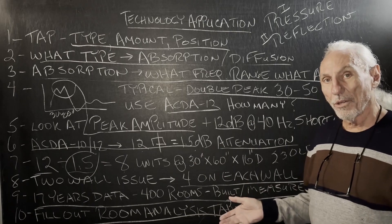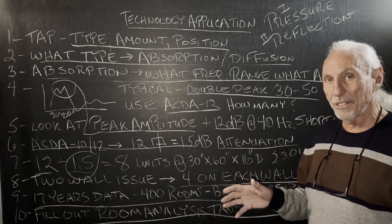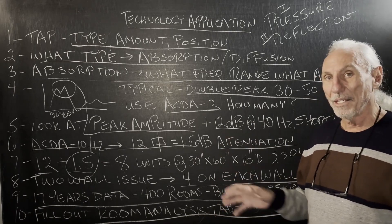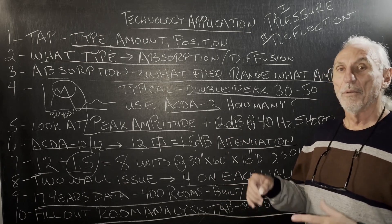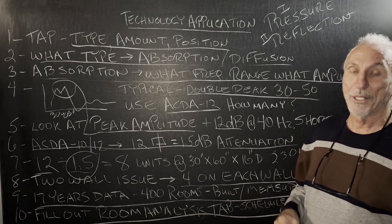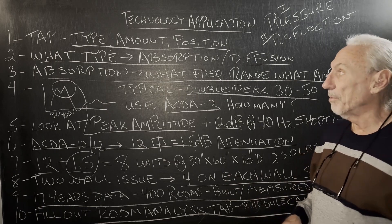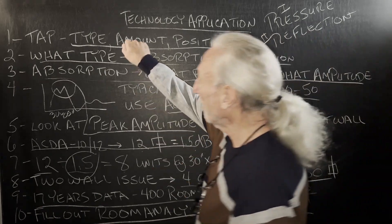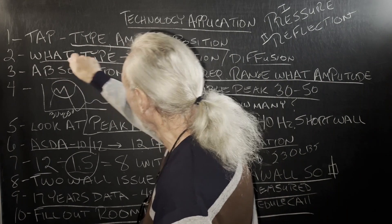So we're going to walk you through a process we go through, rough process, so you kind of get an idea of what you're up against in terms of what kind of treatment do I use, type, how much of it do you use, and obviously where do I put it. So we know type, amount, position, our acronym TAP.